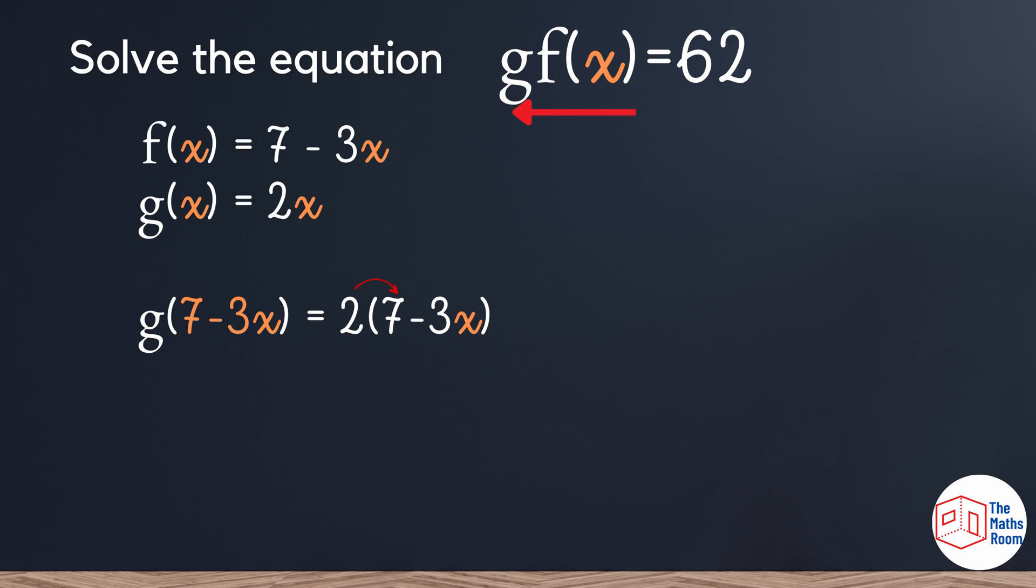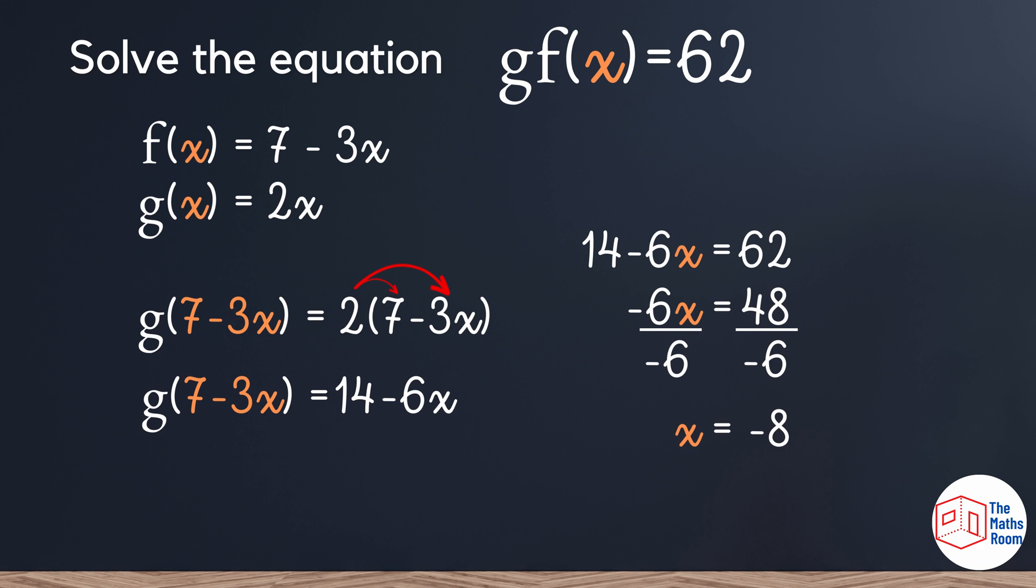Expanding my brackets we say 2 times 7, which is 14, and 2 times negative 3x becomes negative 6x. Now we can place 14 minus 6x equal to 62. It's now just a linear equation and we need to find the value of x. Taking the 14 to the other side, we need to get rid of that negative 6, so we divide both sides by 6. We get x is equal to negative 8.